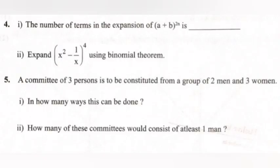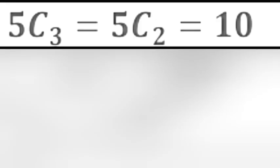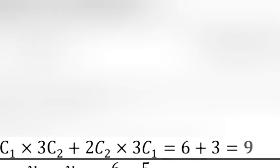Problem 5: A committee of 3 persons is to be constituted from a group of 2 men and 3 women. Part i: In how many ways can this be done? Part ii: How many of these committees would consist of at least one man? Answer: Part i: 5C3 = 5C2 = 10. Part ii: 2C1 × 3C2 + 2C2 × 3C1 = 6 + 3 = 9.